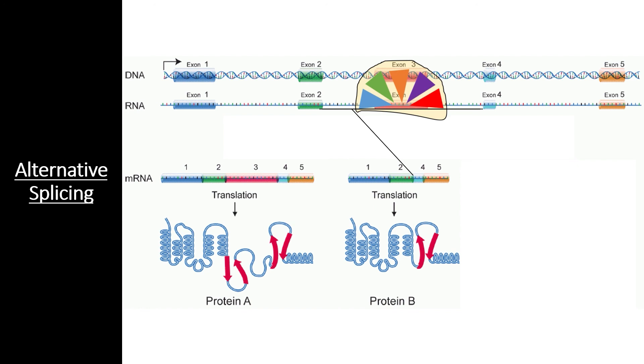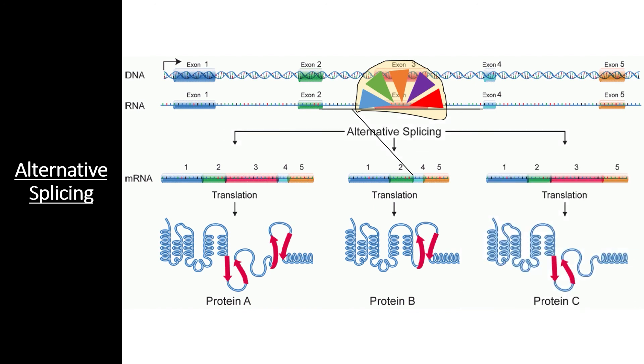These isoforms can also have extended exons or included introns. Some isoforms can function differently in different tissue types and environments based on the spliceosome each cell creates, leading to differential cell functions. The many versions of a protein created by the inclusion and exclusion of different exons and introns proteins are made possible by alternative splicing.